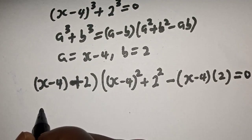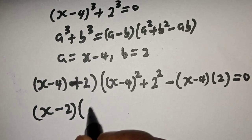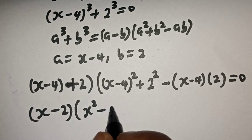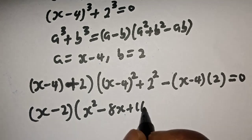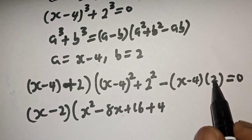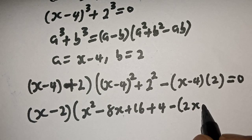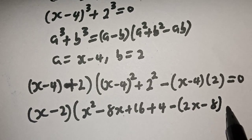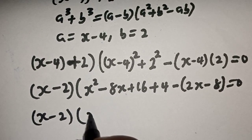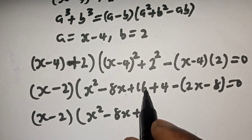So this gives x minus 4 plus 2, that is x minus 2. Opening the bracket, we have x squared minus 8x plus 16, plus 2 squared which is 4, then minus 2x minus 4 times 2 equals 8, all equal to 0.